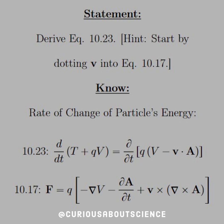Well, we want to derive the rate of change of the particle's energy. So d by dt of T, the kinetic energy, plus qV, the potential. Okay, we remember that from our Physics 2 courses. But this says that that's equal to the rate of change partial d over dt of qV minus v dot A.